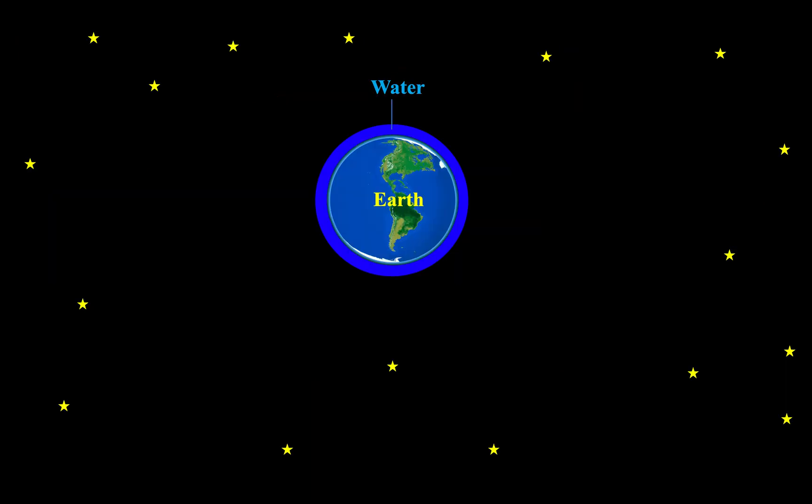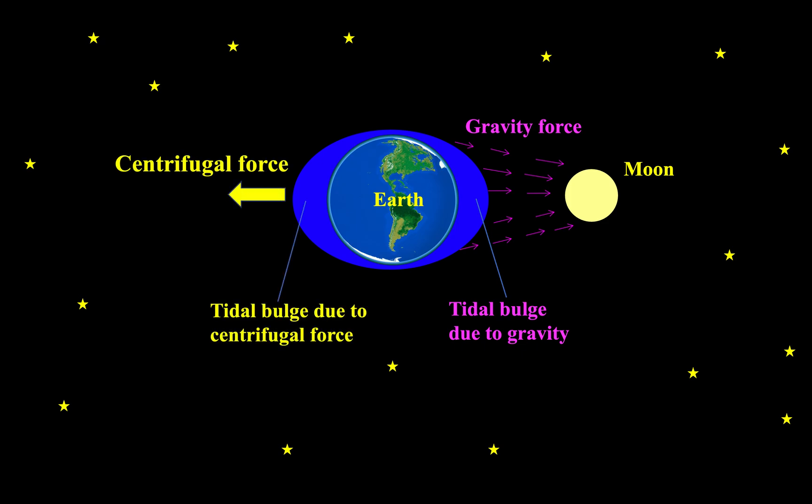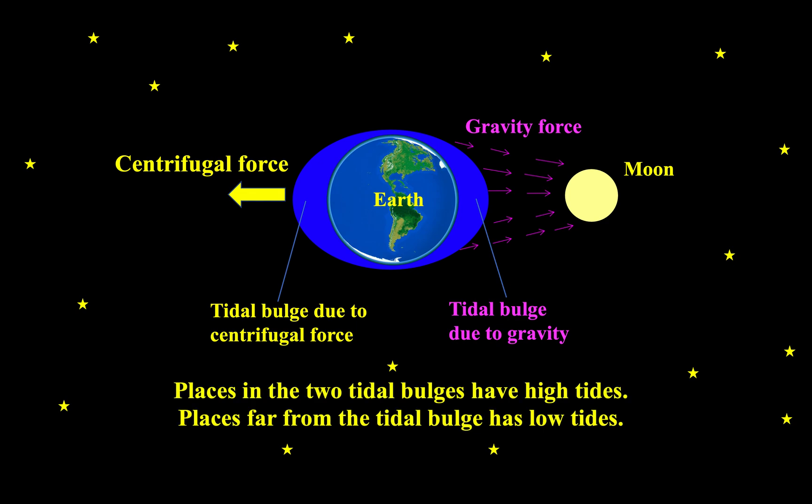Without the Moon, water level on Earth is the same everywhere at any time. So, there is no high tide and no low tide. When orbiting around the Earth, the Moon pulls the ocean's water towards it. This pulling force is called gravity. The Moon's gravity causes a tidal bulge. Centrifugal forces cause another bulge on the opposite side. Places in the two tidal bulges have high tides, while places far from the tidal bulges have low tides.